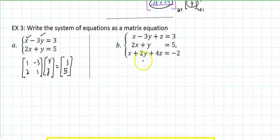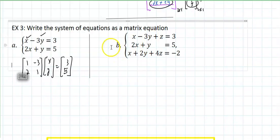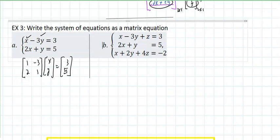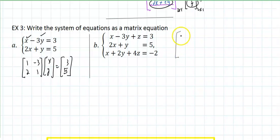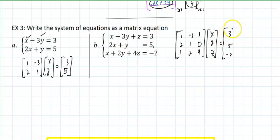And if you look at b, the same deal. You would say, well, all right, if I want to do that one, so I have space, I would say, let me get the coefficient matrix. That is, the 1, negative 3, 1, 2, 1, 0, 1, 2, 4. And if I multiply that by, in this case, what are the variables? x, y, z. And that would equal the constants, which is 3, 5, and a negative 2.